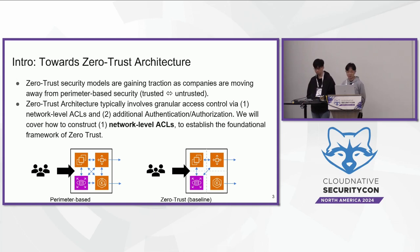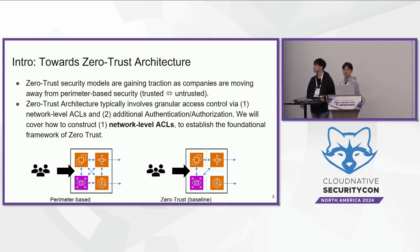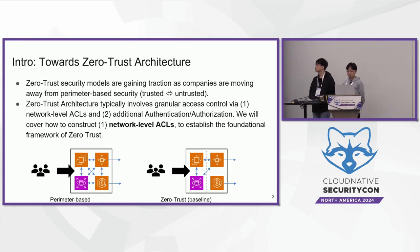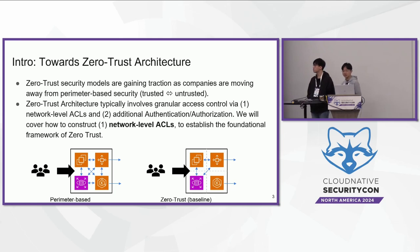What is Zero Trust? The Zero Trust security model is gaining traction as it shifts away from traditional perimeter-based security. Zero Trust architecture focuses on granular access control through two main components. The first one is network-level ACLs, which are simple firewall rules covering inbound and outbound traffic, and some additional authentication and authorization.